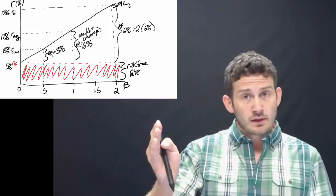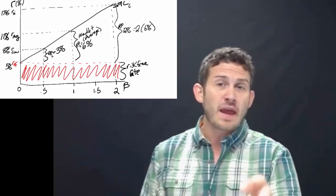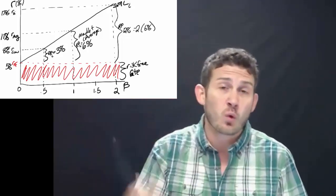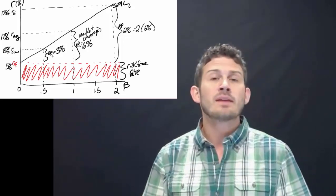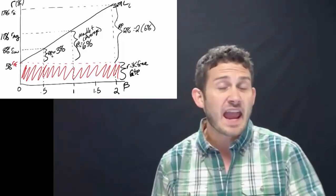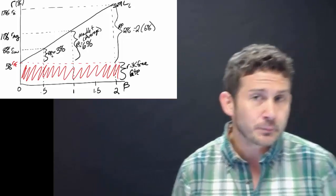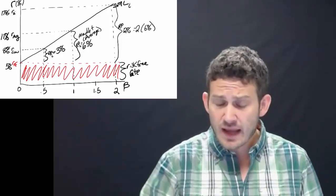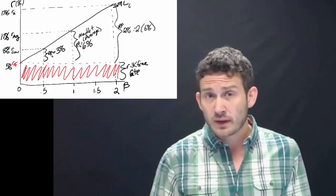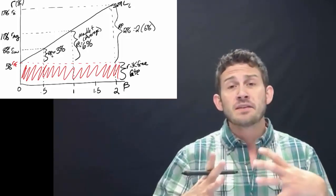As we trace along this security market line, we can pick any beta — depending on the risk premium — follow that beta up to the security market line, and it tells us what our required return on that particular stock should be. Every stock should lie along this line. The key takeaway is that as we increase beta, we increase risk, and the required return rises — as we can see, the space between the risk-free rate and the security market line gets larger.